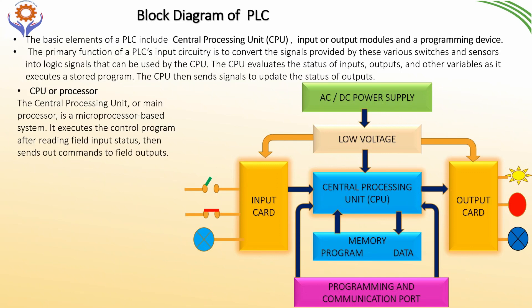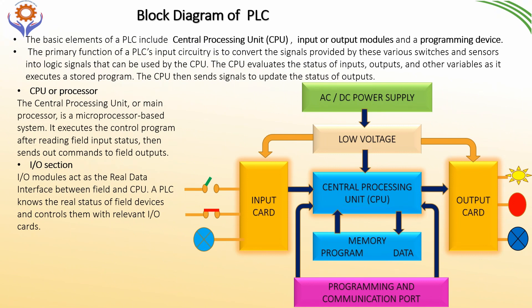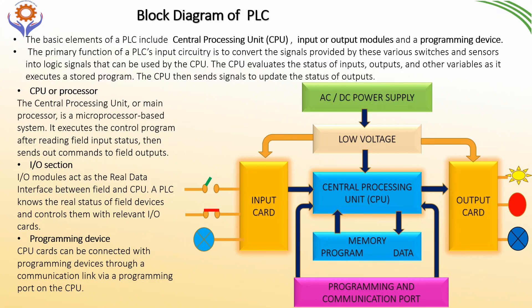The CPU or processor — the central processing unit is a microprocessor or microcontroller-based system. It executes the control program after reading the field input status, then sends out commands to the field outputs. The second element is the input/output section: the I/O modules act as a real data interface between the field and the CPU. The PLC knows the real state of the field devices and controls the relevant input/output card. The programming devices can be connected to the CPU cards through communication links via the programming port.